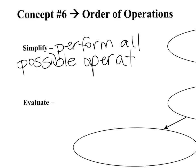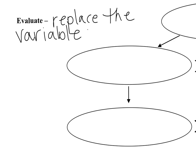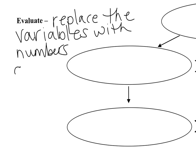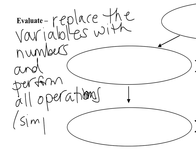Later we will talk about exactly what it means to combine like terms. For now, we're just going to perform all possible operations. To evaluate also just means to simplify, but in this case you're going to have variables and you'll be told what the variables represent. So we simply replace the variables with numbers and perform all operations. You're just going to keep going until you can't go any longer.